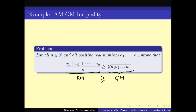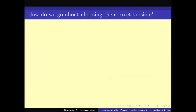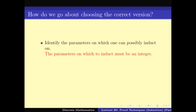One way of proving this is by induction. But again, which version to use and what parameter to induct on? There are many parameters here — for example, the n and the ai's. However, the most crucial thing is that you can only induct on an integer parameter; you cannot induct on a real number. In the AM-GM inequality, there is only one integer: n, the number of ai's. So it is clear that we have to induct on n.